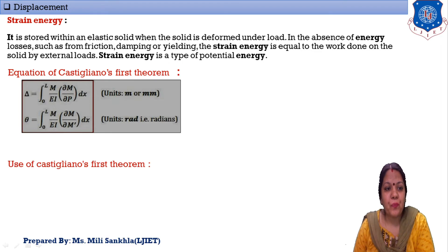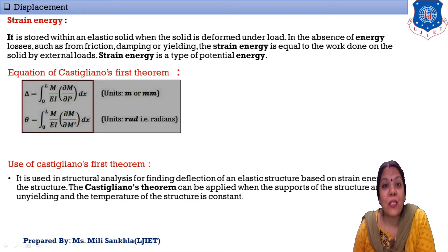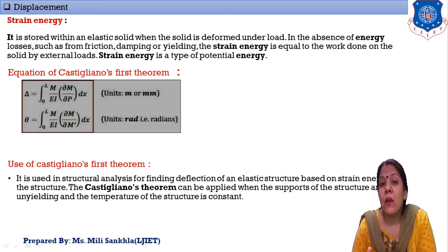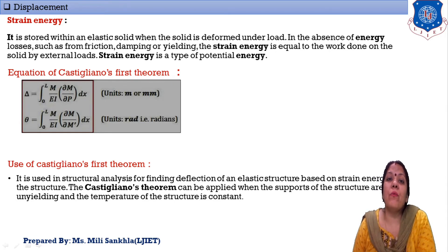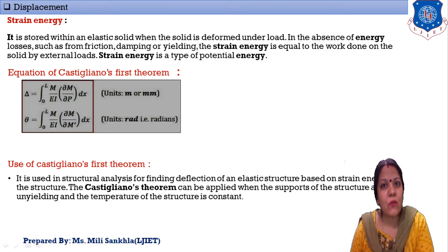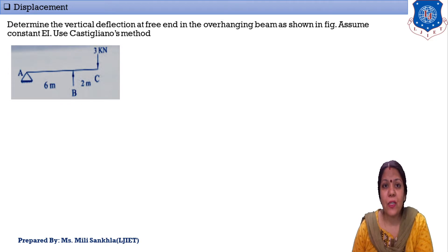This theorem is used in structural analysis to find deflection and slope for elastic structures using the concept of strain energy. An important limitation: when analyzing beams with Castigliano's First Theorem, the supports must not be yielding and temperature must be constant. If supports are yielding or temperature is not constant, this method is not applicable.